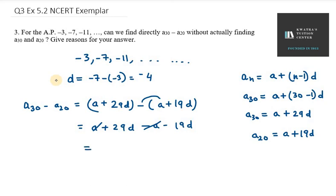So now the difference we get is 10D, which is 10 into minus 4, which equals minus 40. That means the difference between the 30th term and 20th term is minus 40. So that's your answer for question number 3.